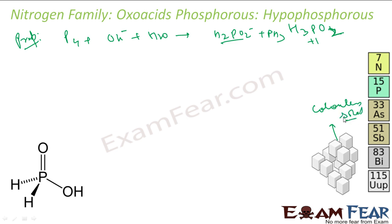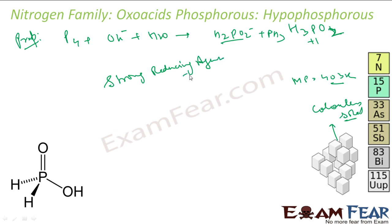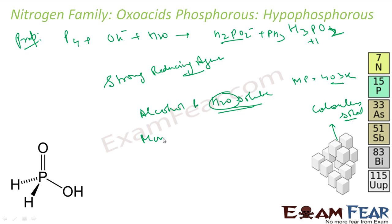Its melting point is almost 403 K and it is a strong reducing agent. It is both alcohol and water soluble. Due to water solubility, there will be hydrogen bonding here. This is a monobasic (monoprotec) acid — in the structure of H3PO2, there is one P=O bond and one P-OH bond.